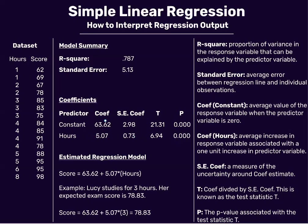Using the coefficient values, you can form the estimated regression equation — the line of best fit. In this case: score = 63.62 + 5.07 × hours. We can use this model to make predictions. For example, if a student named Lucy studies for three hours, her expected exam score would be 63.62 + 5.07 × 3 = 78.83. So her expected exam score is 78.83, calculated using the number of hours she studied.